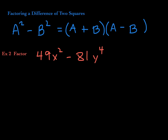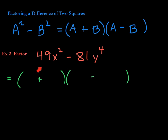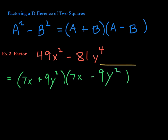Next example. First of all, this is a difference. 49x squared is 7x times 7x. 81y to the fourth is 9y squared times 9y squared. Therefore, this is definitely a difference of two squares. It will factor as a product of two binomials — one will be plus, the other will be minus. What do you square to get 49x squared? 7x. What do you square to get 81y to the fourth? 9y squared. So 9y squared goes there and there, and you are done.